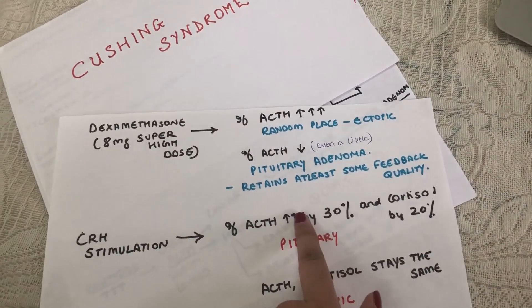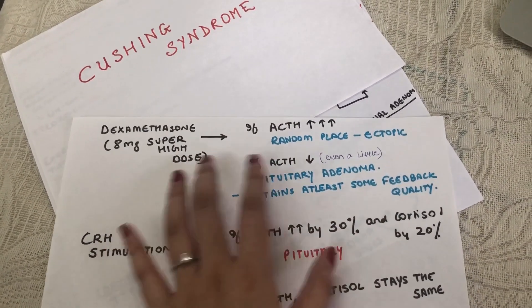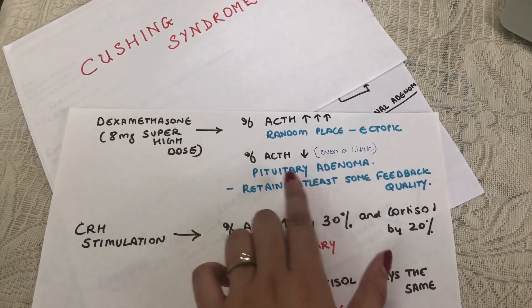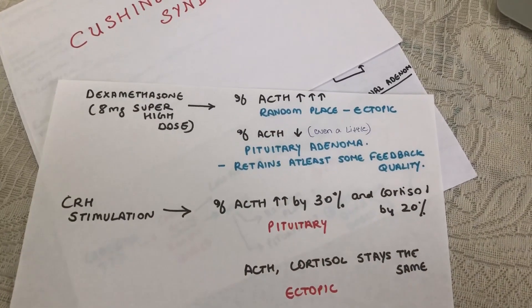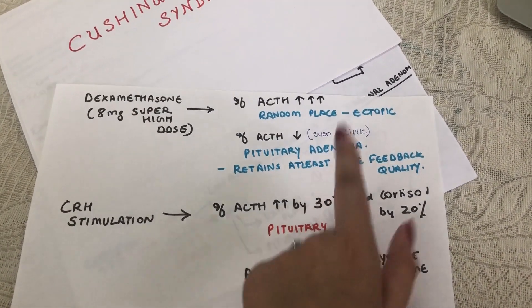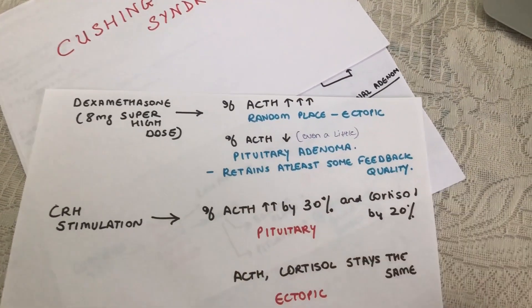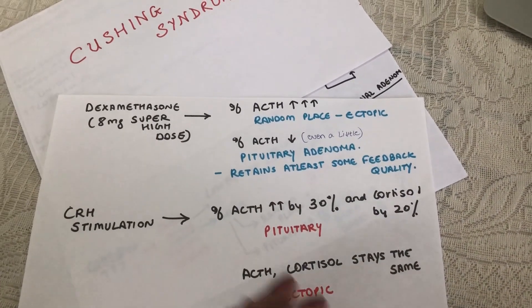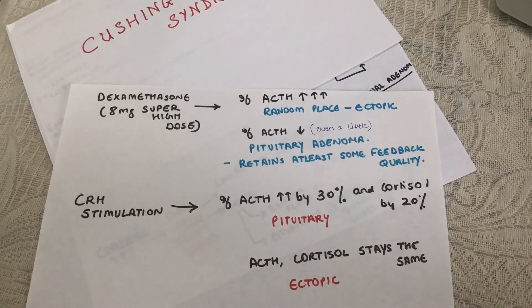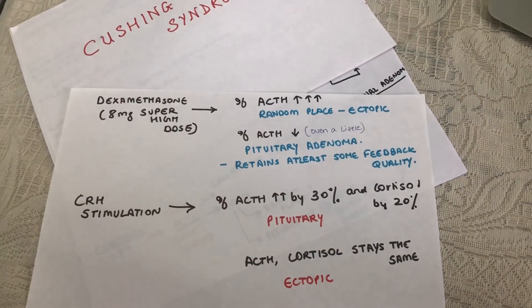If it does get suppressed a little bit, then you can be sure that it's coming from a pituitary source. Because even though it has an adenoma, it will still retain a little bit feedback quality. A little bit ACTH will end up being suppressed when you put so much high-dose dexamethasone from outside.